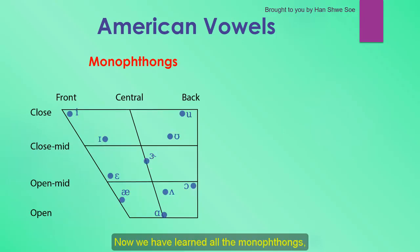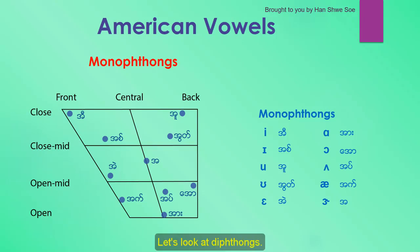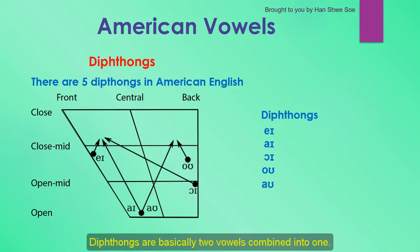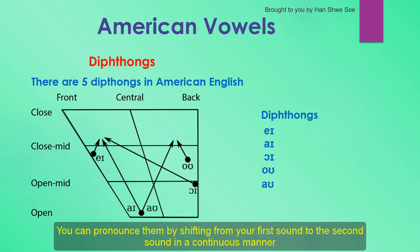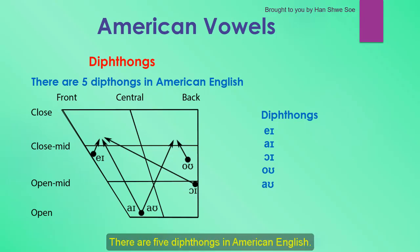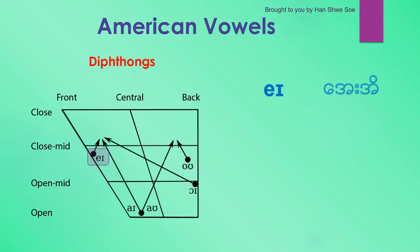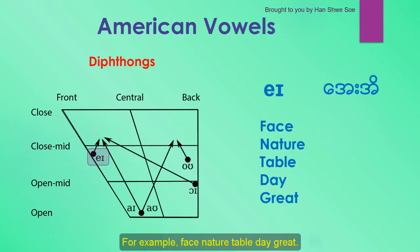Now we have learned all the monophthongs and the way to pronounce them. Let's look at diphthongs. Diphthongs are basically two vowels combined into one. You can pronounce them by shifting from your first sound to the second sound in a continuous manner. There are five diphthongs in American English. The first one is the EI sound. For example: face, nature, table, day, great.